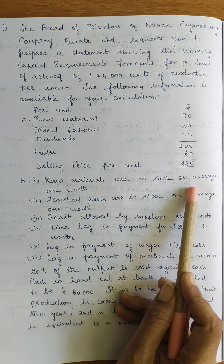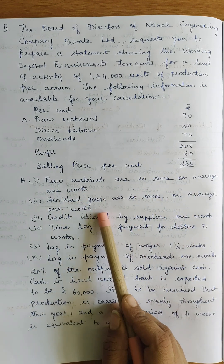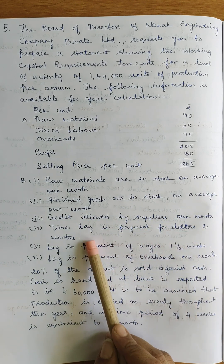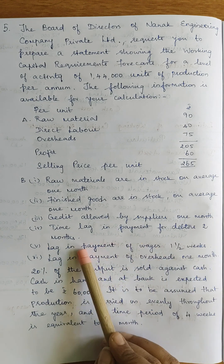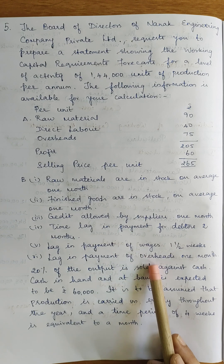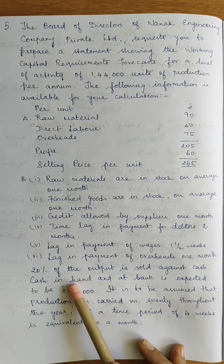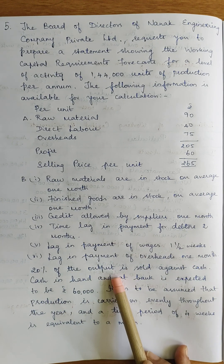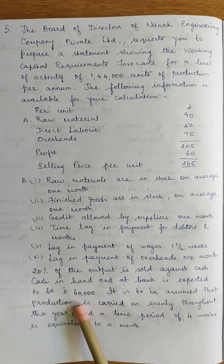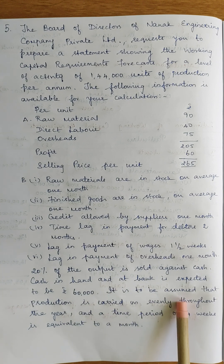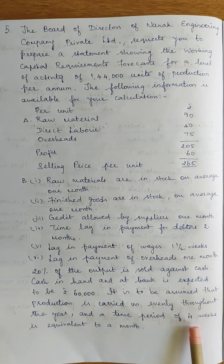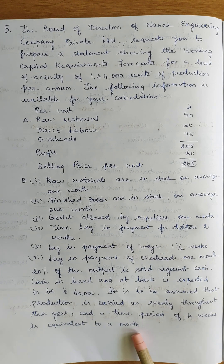Raw materials are in stock on average 1 month. Finished goods are in stock on average 1 month. Credit allowed by suppliers 1 month. Time lag in payment for debtors 2 months. Lag in payment of wages 1 and a half weeks. Lag in payment of overheads 1 month. 20% of the output is sold against cash. Cash in hand and cash at bank is expected to be 60,000 rupees. It is assumed that production is carried on evenly throughout the year and a time period of 4 weeks is equivalent to a month.